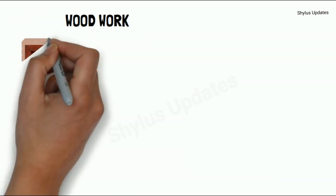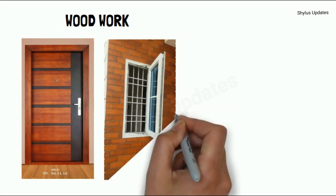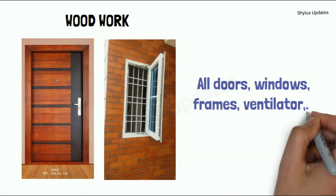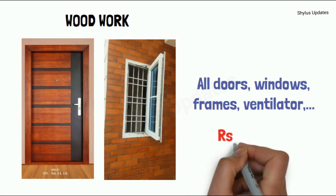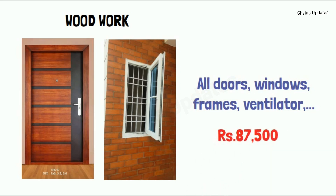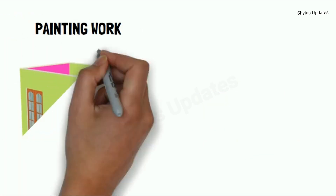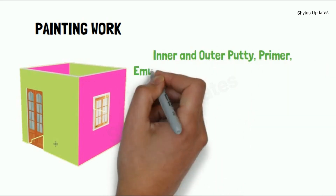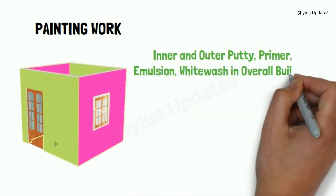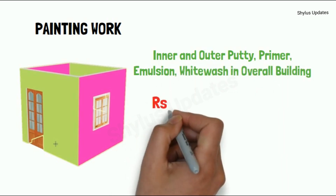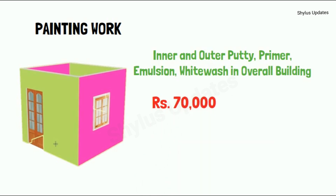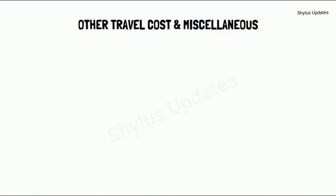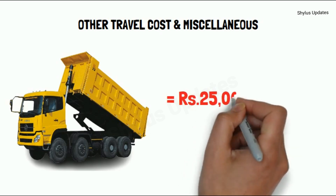Woodwork. For all doors, windows, frames, and ventilators, the total cost is Rs. 87,500. Paint total cost is Rs. 70,000. Other transport cost and miscellaneous cost is Rs. 25,000.